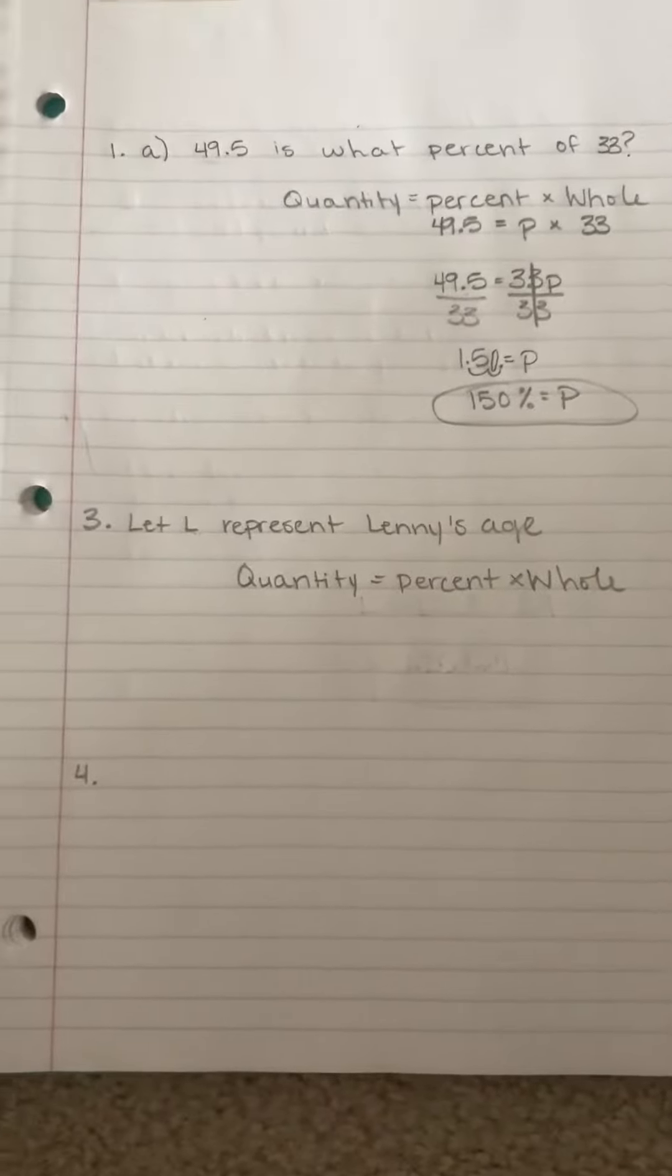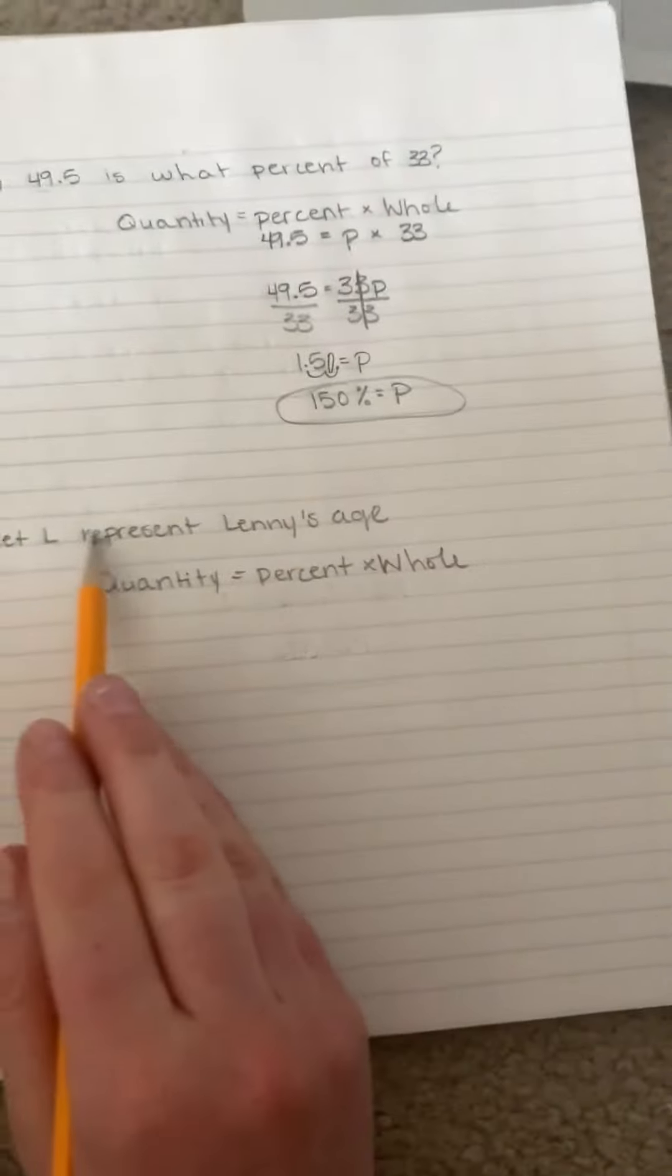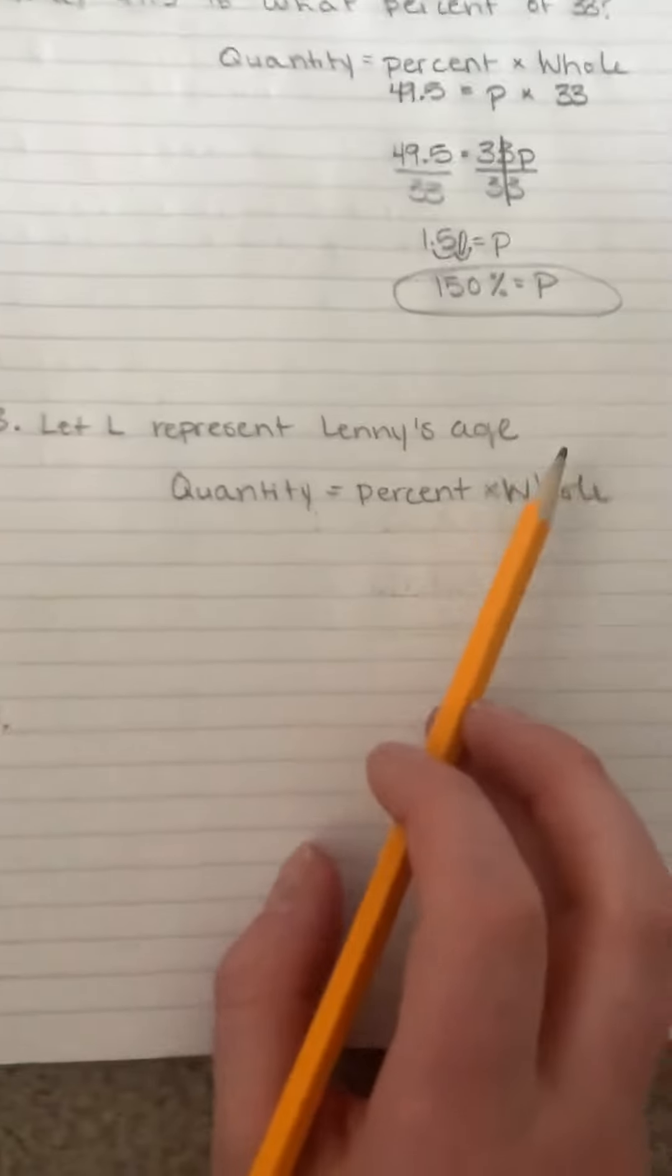So that very last question, how old is Lenny? That's what we don't know, and that's what we're trying to solve for. So I am going to let L represent Lenny's age.